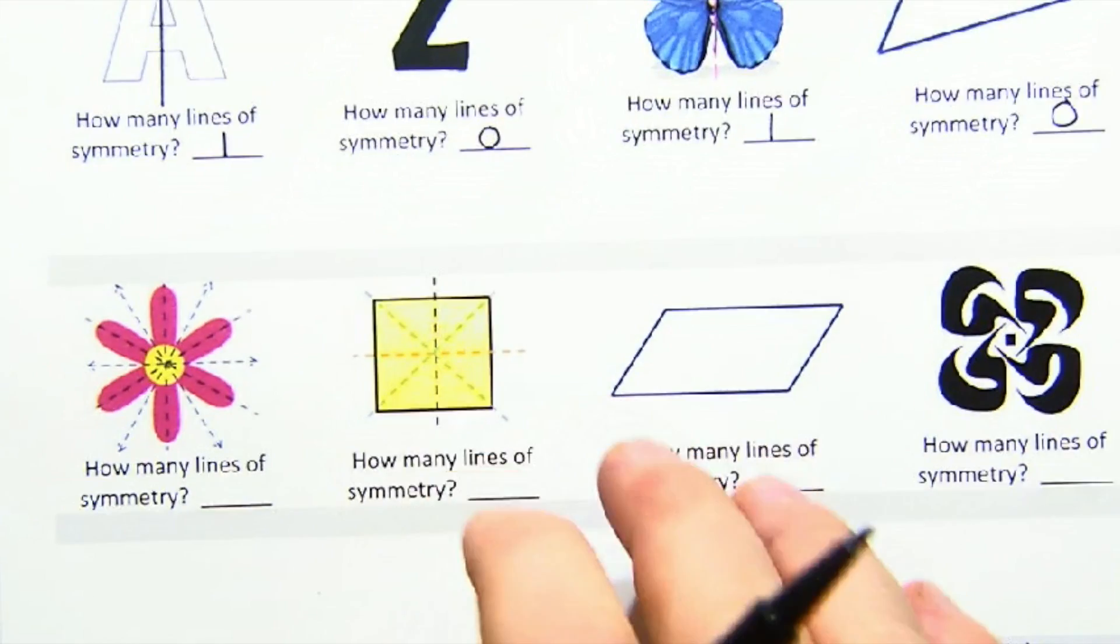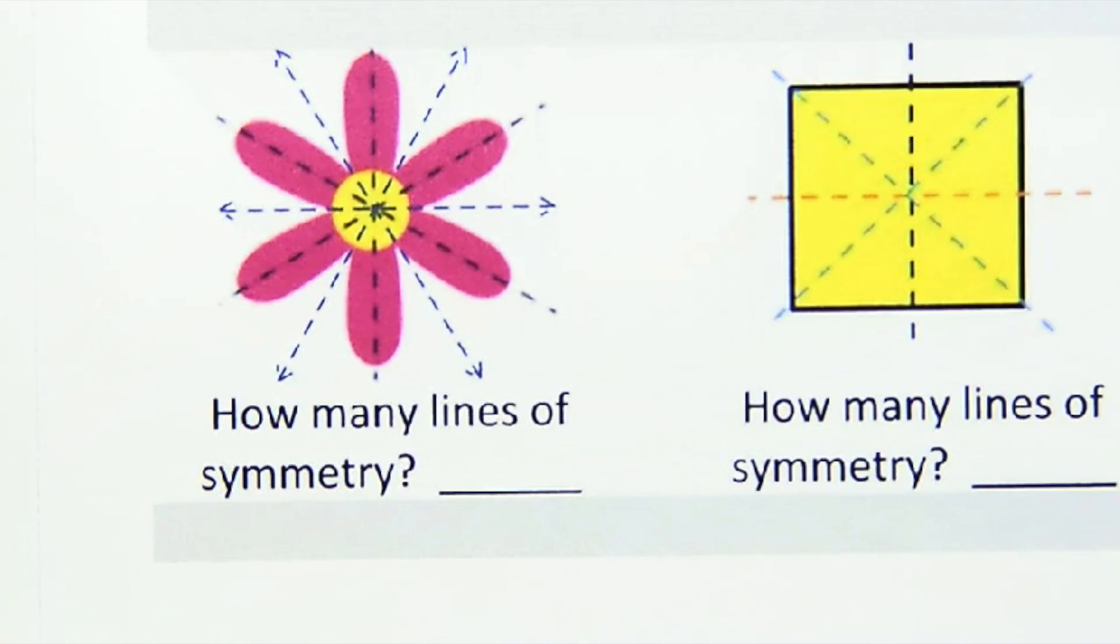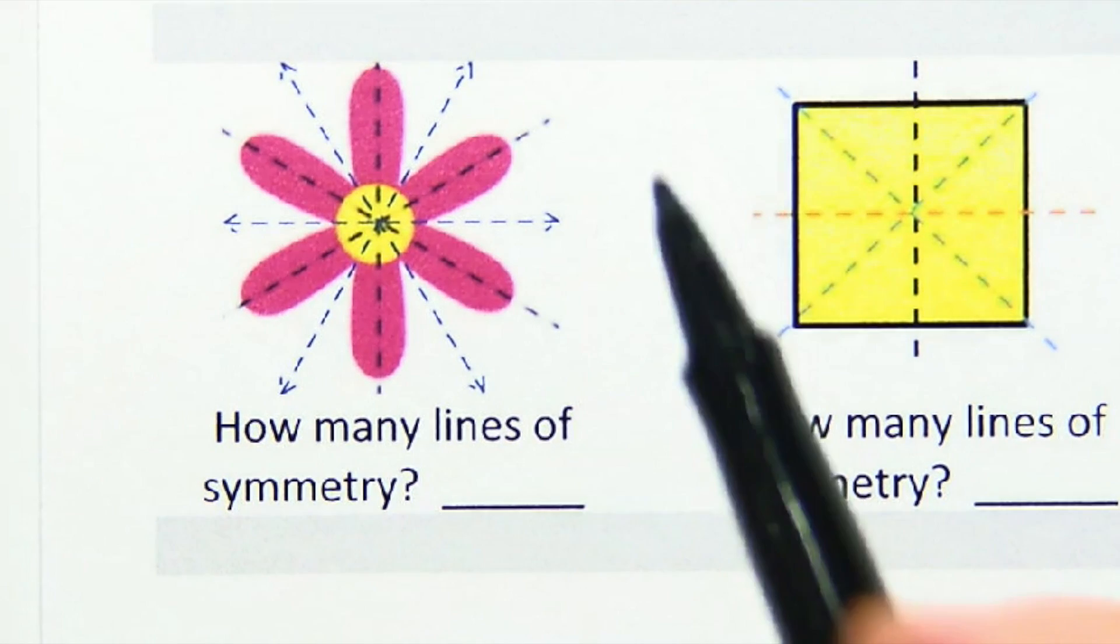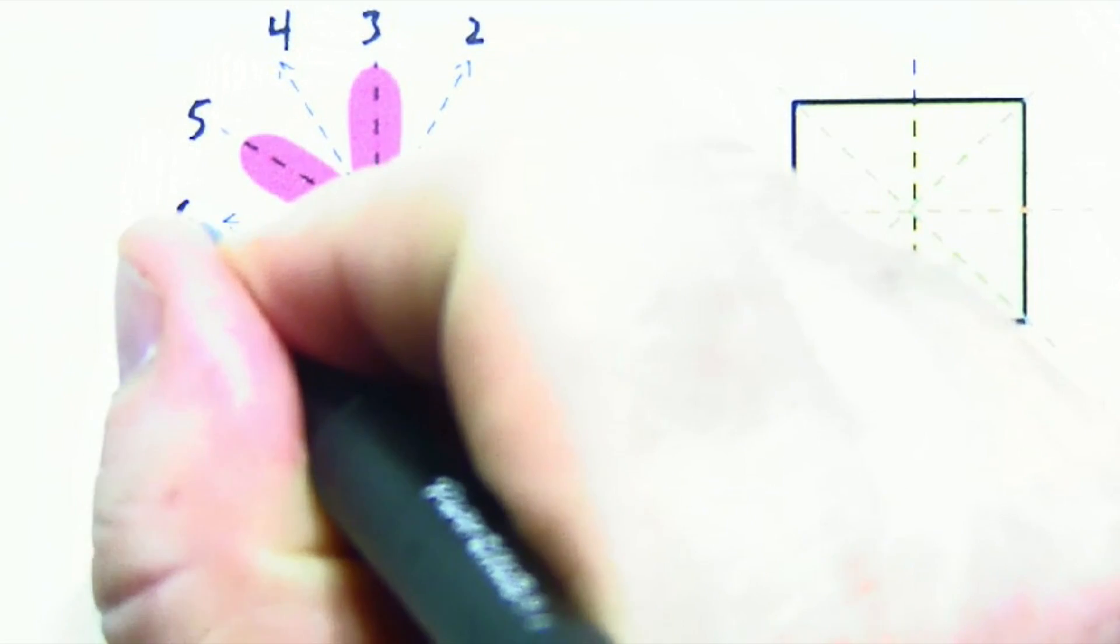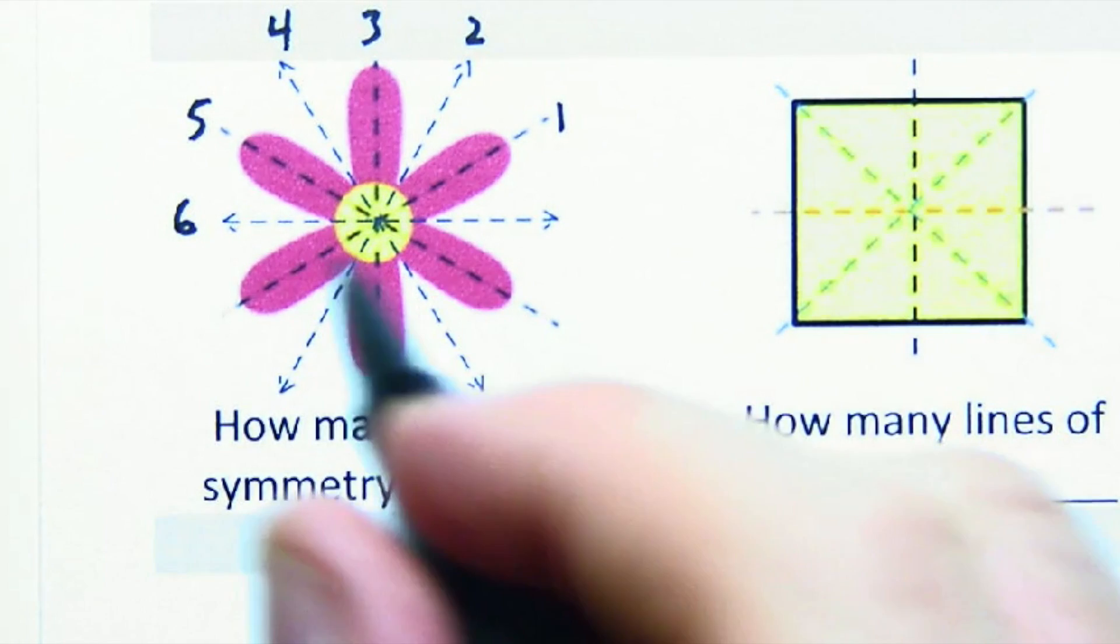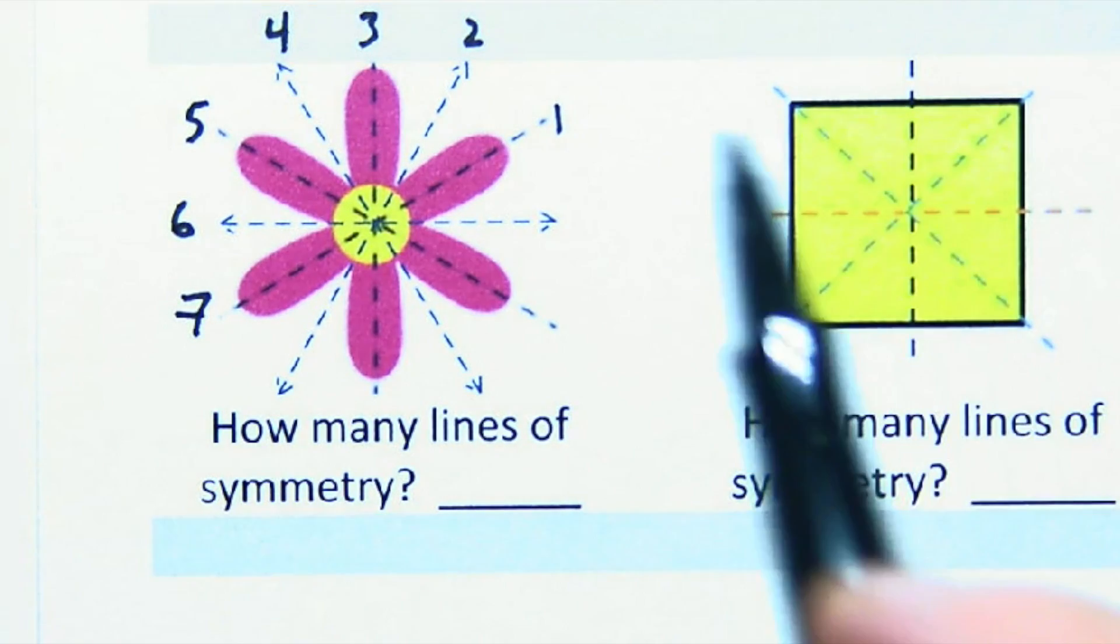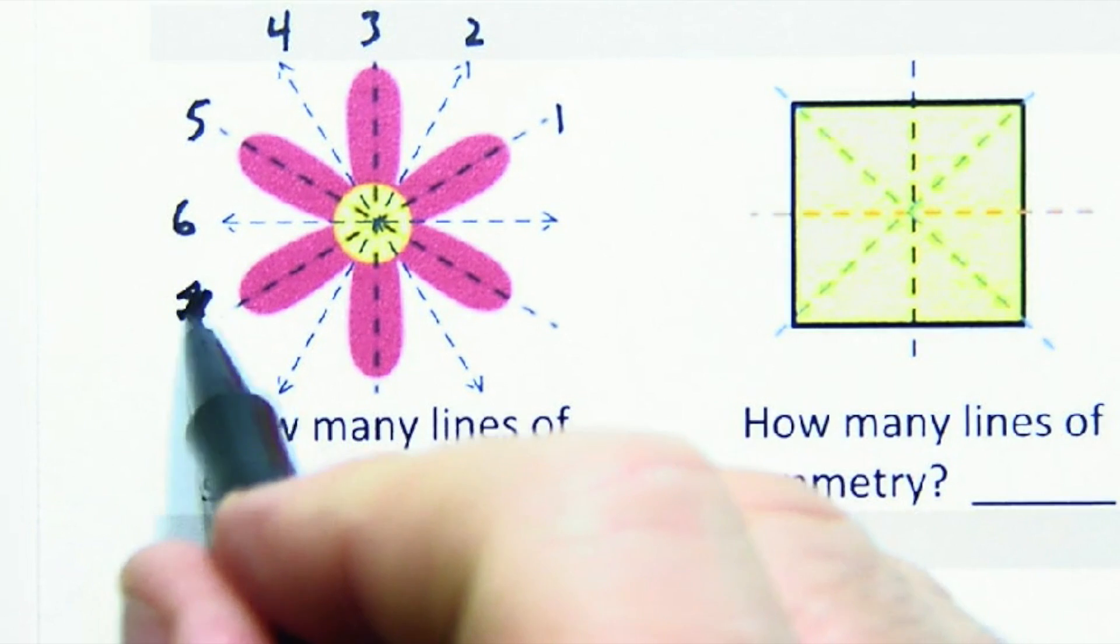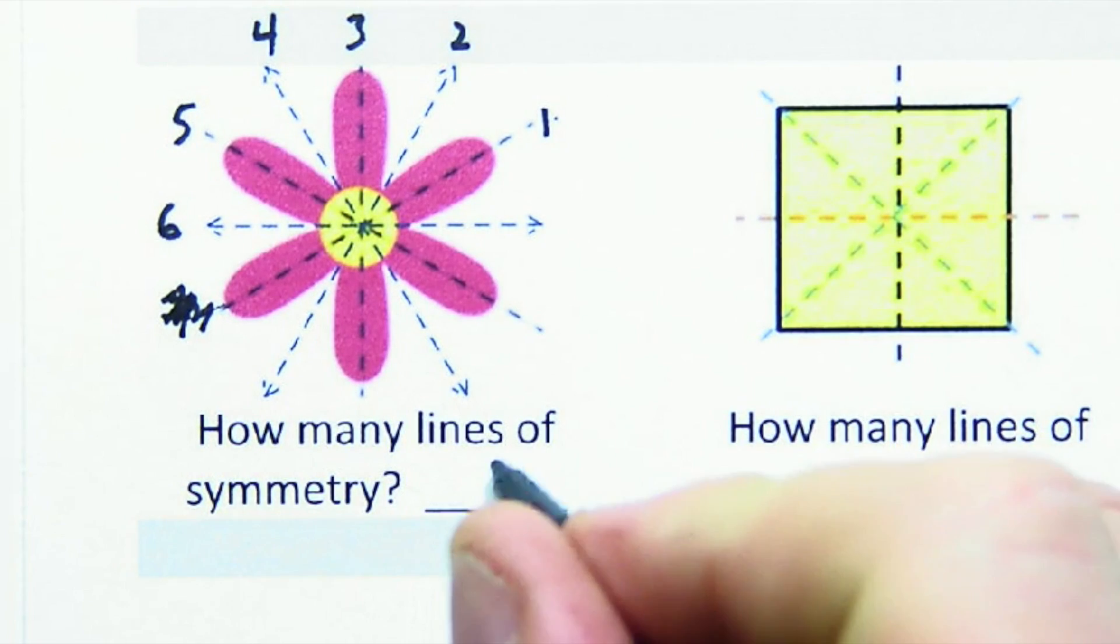This shape here, you can already see the lines drawn in. This is a beautiful example of line symmetry. And we can see, it might be best to number them. One, two, three, four, five, six, seven. Oh, no, seven's too many, right? Because we already have that one. So there are six there, six lines.